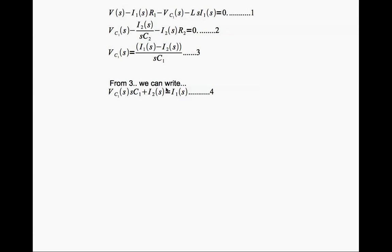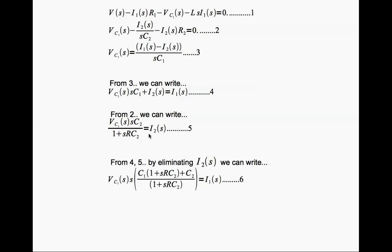Now we want to find relationship between VC1 of S and V of S. We need to eliminate I1 and I2 somehow. How do we do that? First we write I1 in terms of I2 and VC1 from equation 3. From equation 2 I can write I2 in terms of VC1, then I substitute I2 in this equation. That's what I get, eliminate I2.